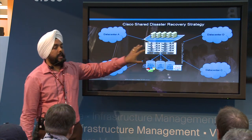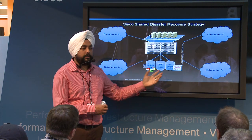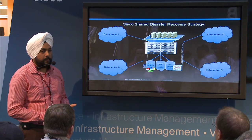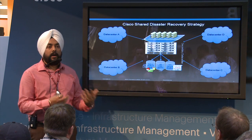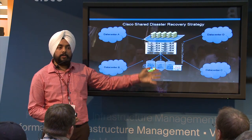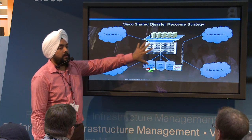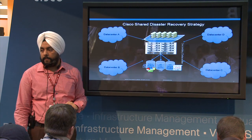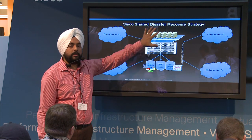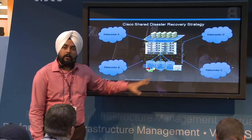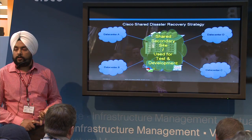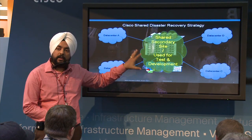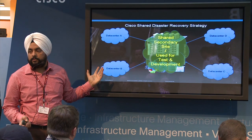In the meantime, you can use these same blades using a different service profile for test and development, or secondary tasks which are not so important and which can be shut down in case a disaster strikes at one of the primary sites. This part of the DR site can be a DR for multiple primary sites — a shared DR across multiple primary sites.